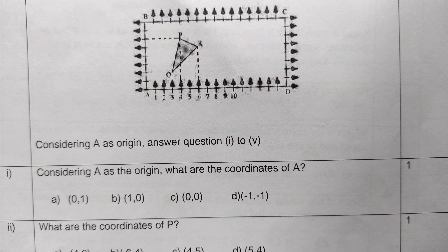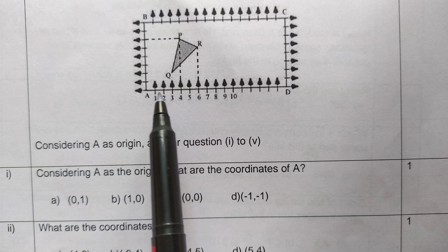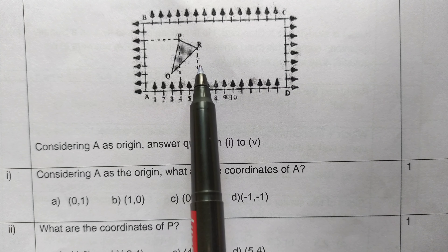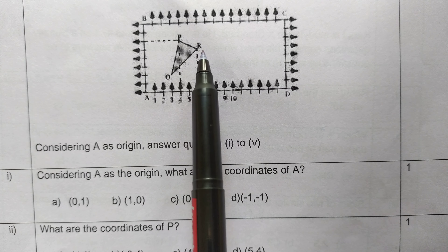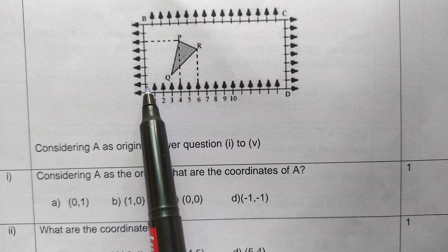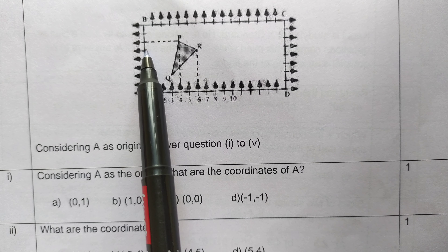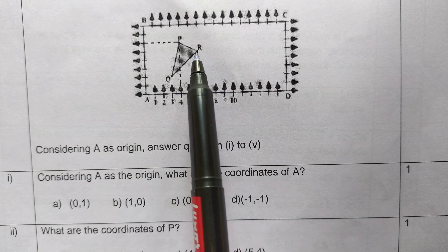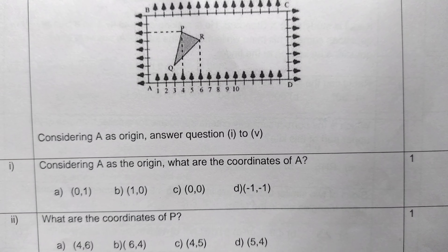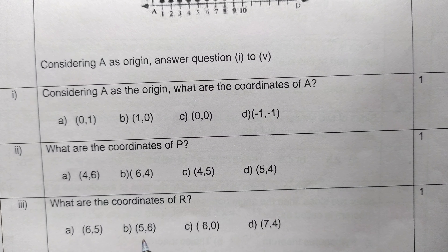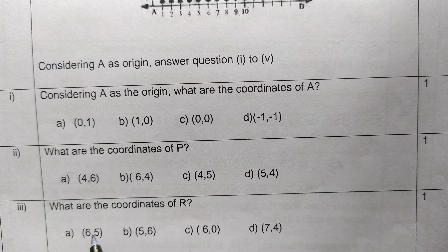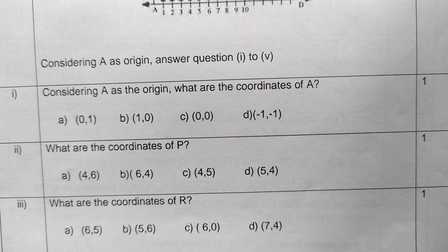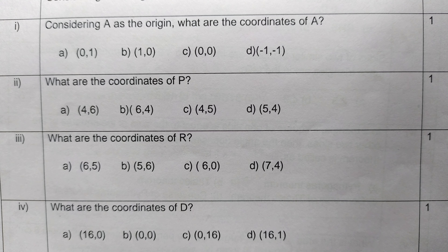The third question is: what are the coordinates of point R? Looking at point R on the figure, the x-coordinate is one, two, three, four, five, six — so x is 6. The y-coordinate is one, two, three, four, five — so y is 5. Therefore the coordinates of R are (6, 5), and option A is the correct answer.